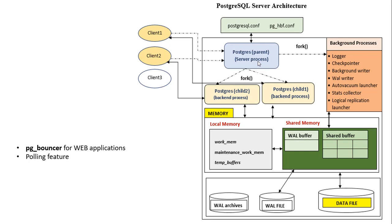Whenever a client makes a request to access the database, they will first be authenticated by the PostgreSQL server process using configuration files. pg_hba.conf is the host-based authentication file. Once authenticated, a new backend process called the PostgreSQL process is created, and the client makes further communications through this backend process only.